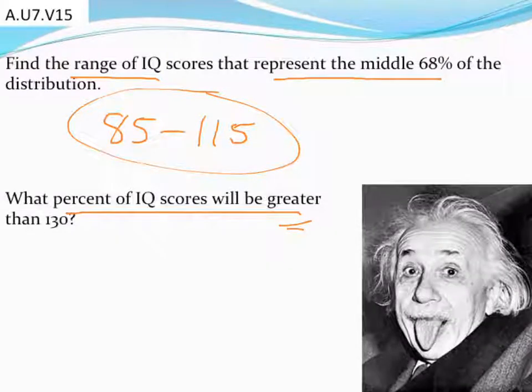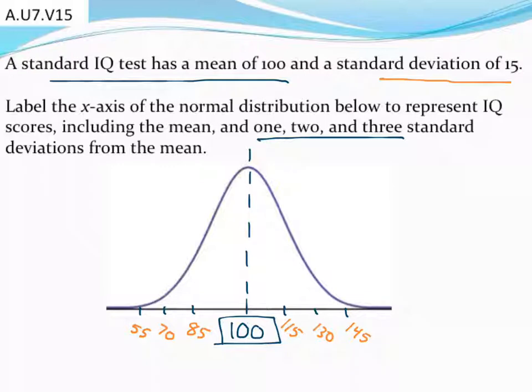And so again, looking back at the graph we made, let's find where 130 is. That was this location here, two standard deviations above the mean.